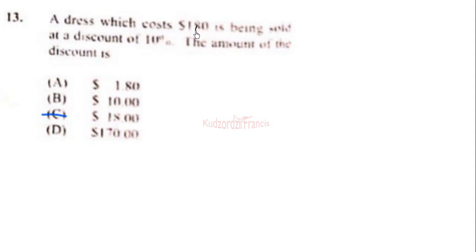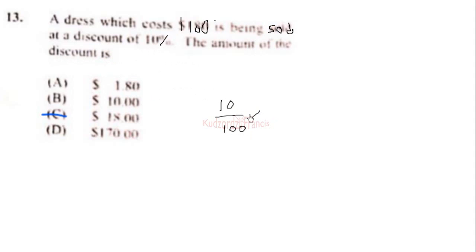Question 13: A dress which costs 180 dollars is being sold at a discount of 10 percent. The amount of discount is the discount rate, which is 10 percent — the same as 10 over 100 — times the price of the dress, which is 180 dollars.